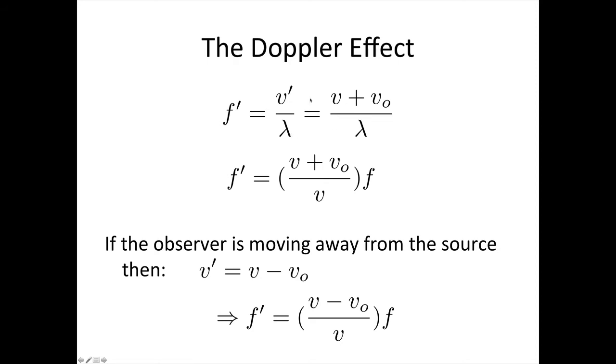The velocity that she observed is given by V plus V subscript O, and that's divided by lambda. We can rearrange this slightly, because lambda equals V divided by F.